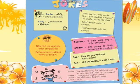So students, this is a page of the jokes column. Let's see some jokes. Teacher asked, "Wally, why are you late?" Wally answered, "The train had a flat tyre."